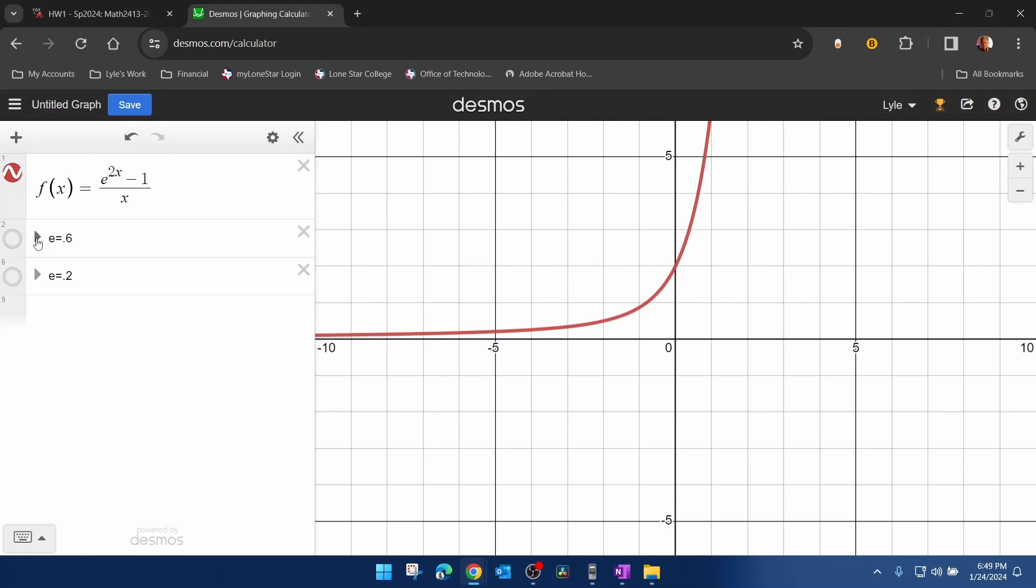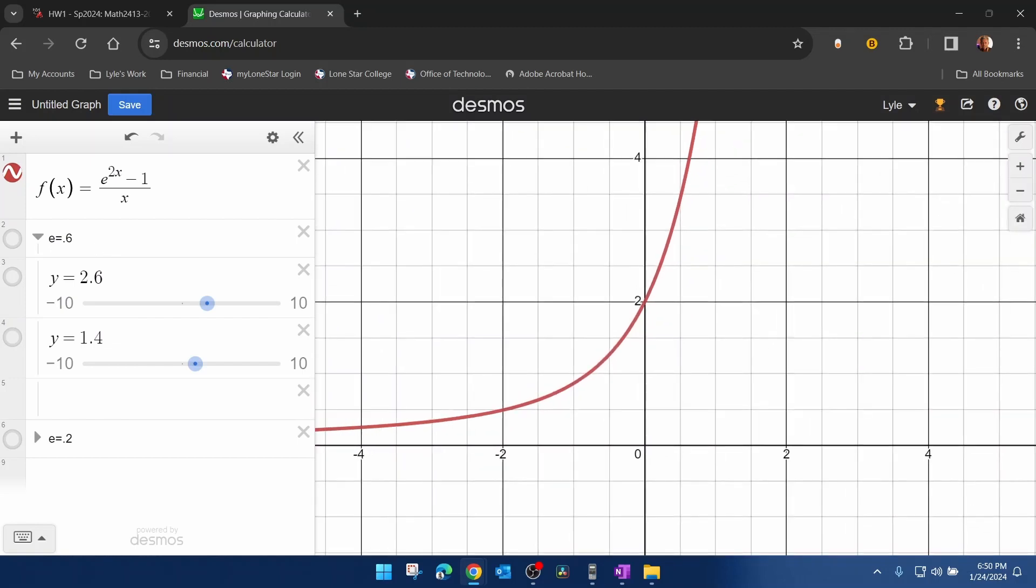Epsilon equal 0.6. What that would indicate is y values that are 0.6 units away from the limit, which is 2. Let me zoom in on this here. And you can see that as x approaches 0, y approaches 2 from the left and the right. And if we let epsilon be 0.6, then that means that we can be 0.6 units away from 2, above and below 2. And that gives us these y values.